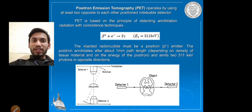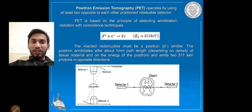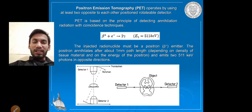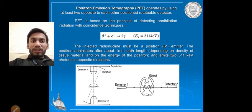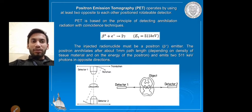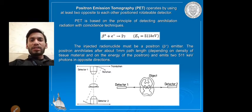We use the beta-positive type of positron. When bombarded by electrons, it produces gamma rays with approximately 511 keV energy. The injected radionuclide must be a positron (beta-positive) emitter. The positron annihilates after about 1 mm path length depending on tissue density and the energy of the positron, emitting two 511 keV photons in opposite directions.